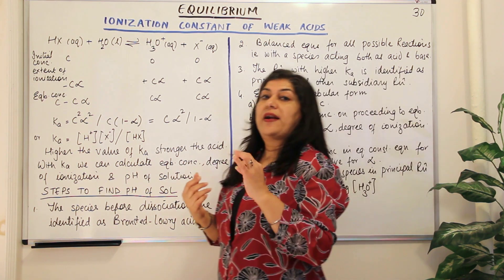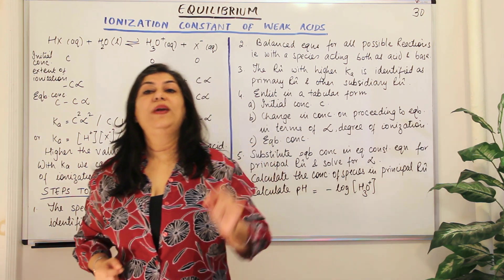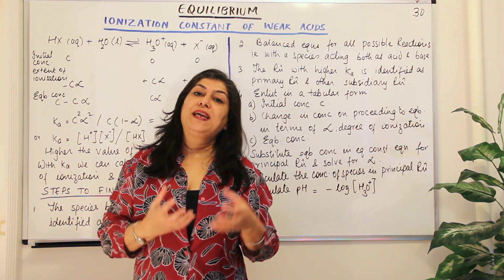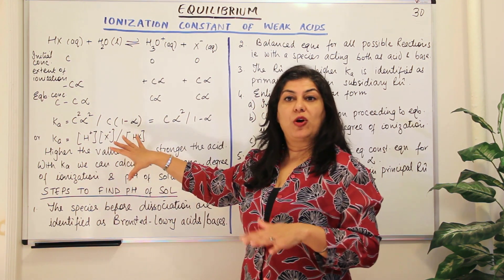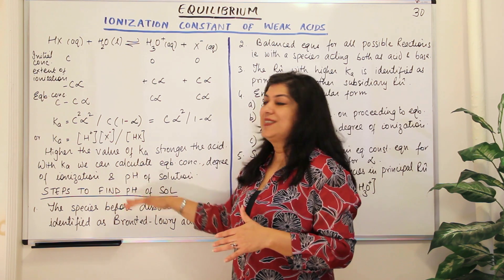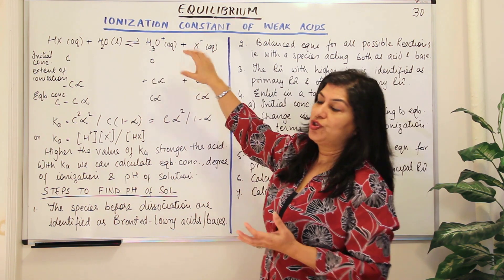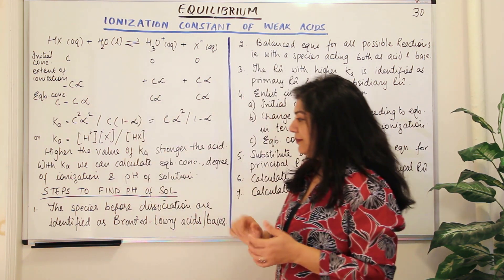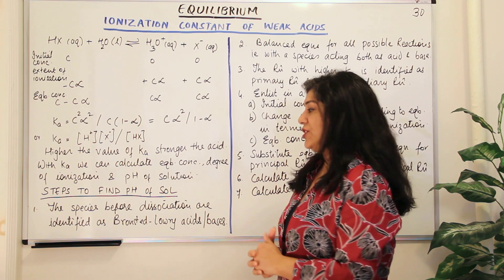Our interest is usually in finding out how strong or how weak an acid is, and we determine that by knowing its pH. So there are steps: once we know the equilibrium constant of a weak acid, you follow certain steps to find out the pH of the resultant solution of that weak acid.